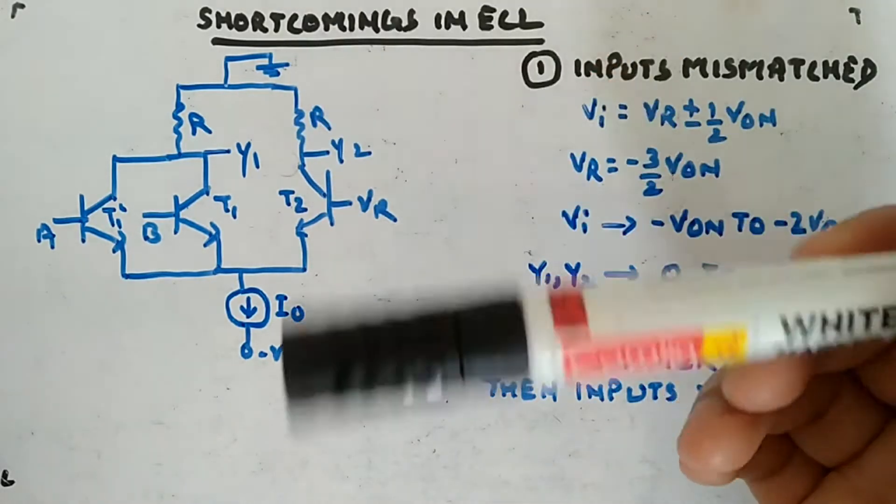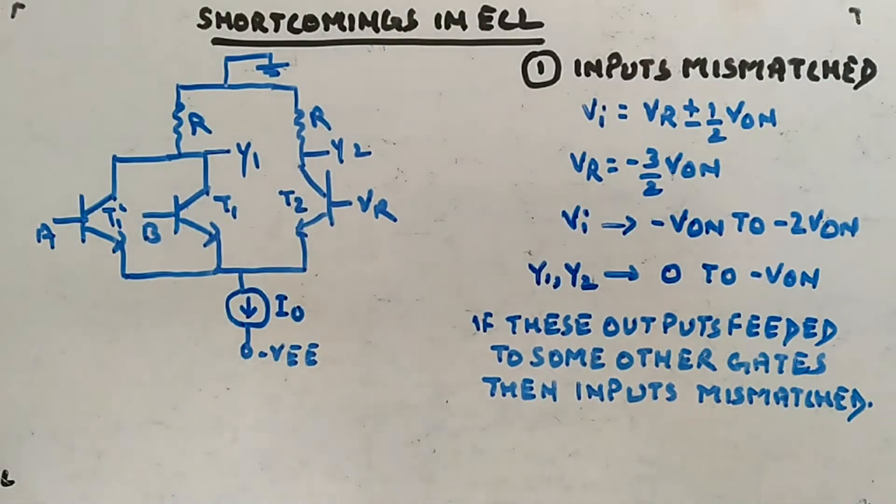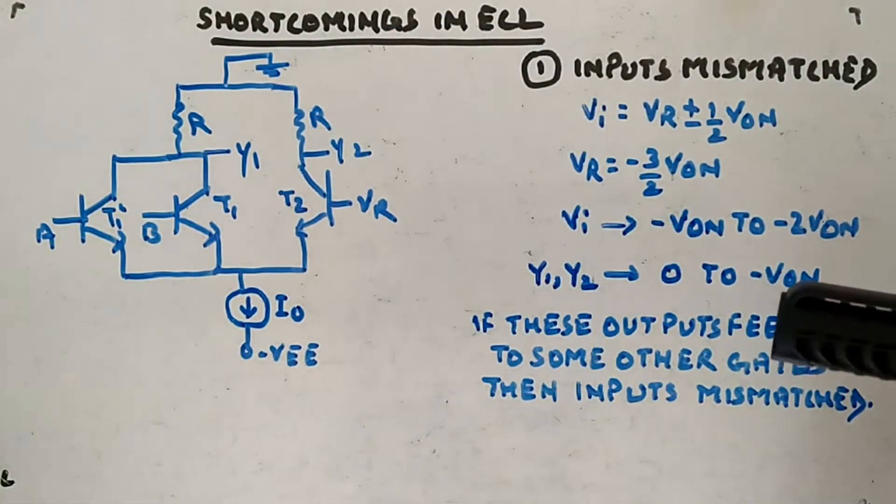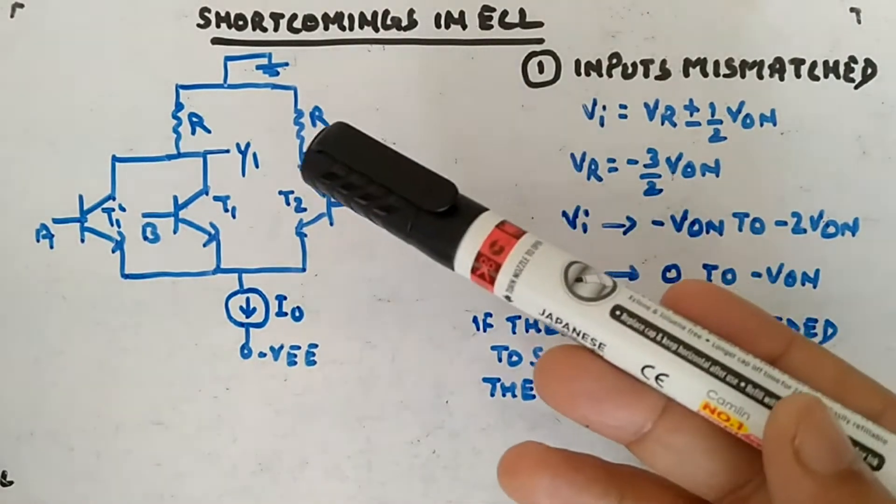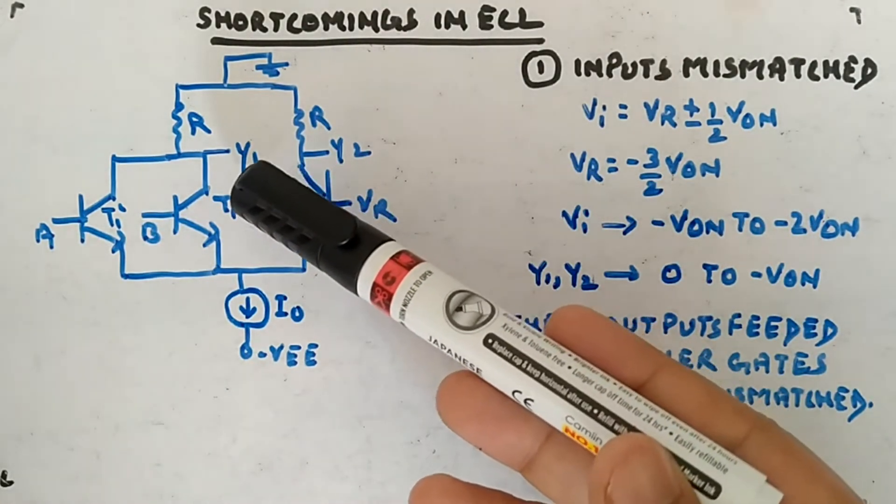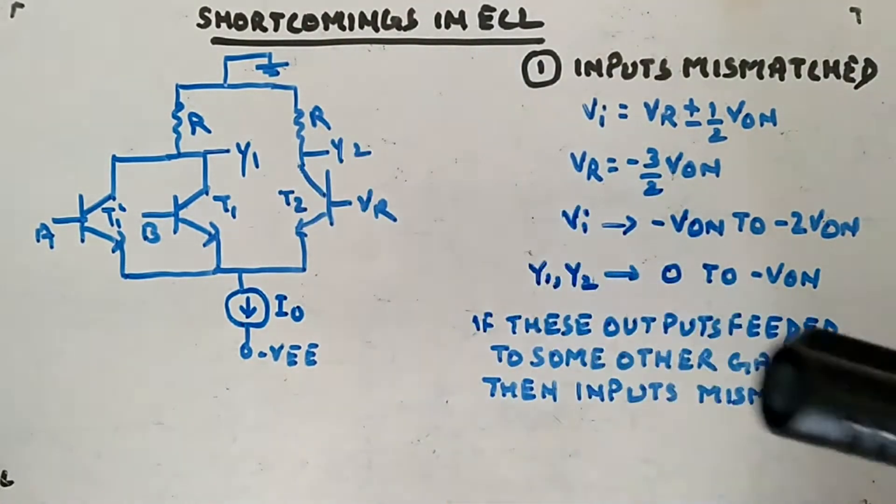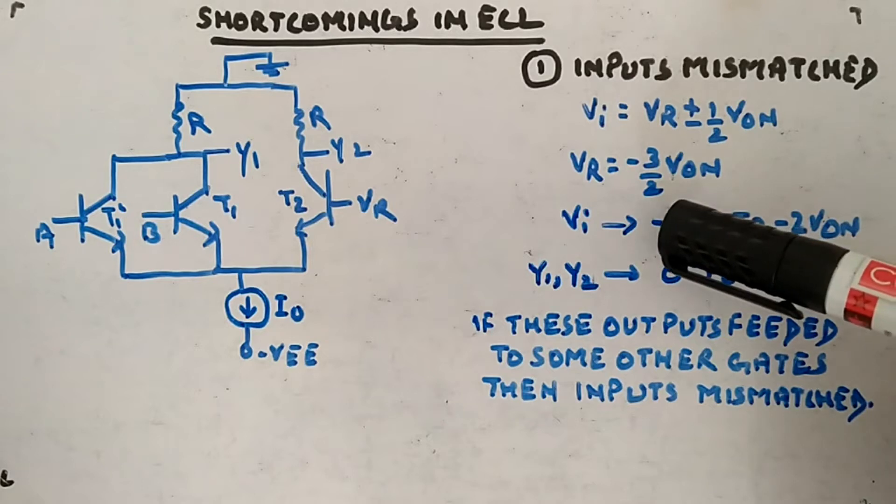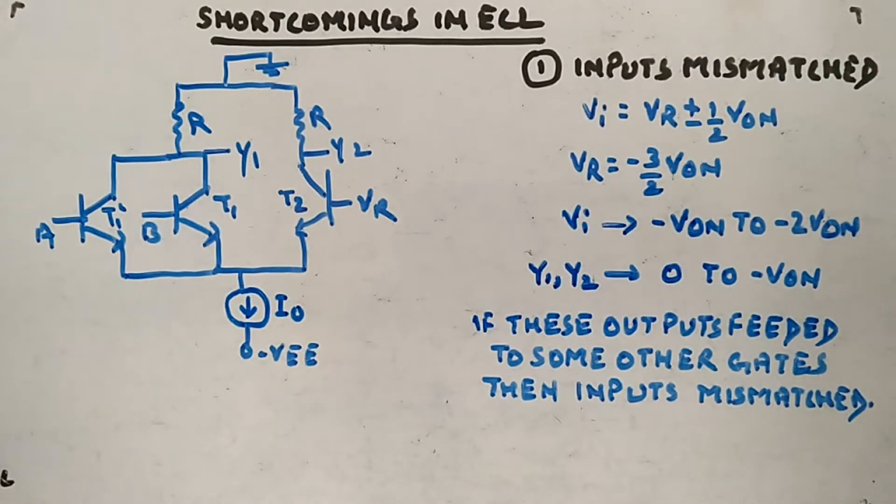I0 will be the maximum current or minimum voltage you will be able to get. So between Y2 and ground you will have minus VON. This will happen with either of them, Y1, Y2, or both. So your output is swinging between 0 and minus VON whereas input is swinging between minus VON to minus 2 VON.